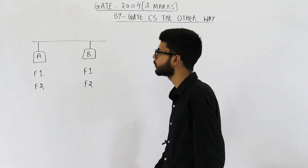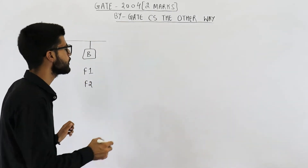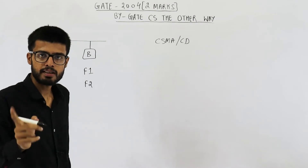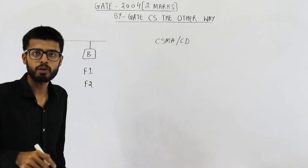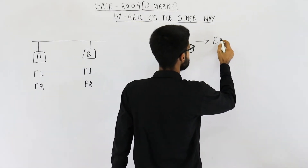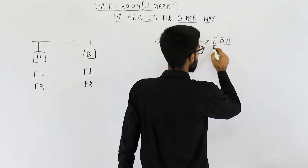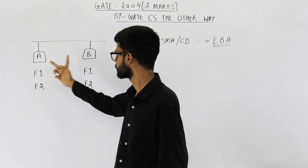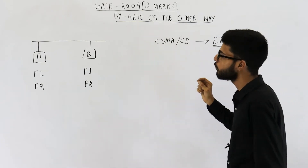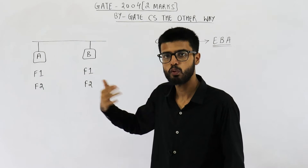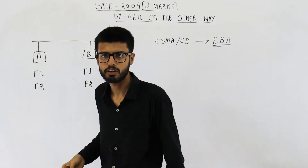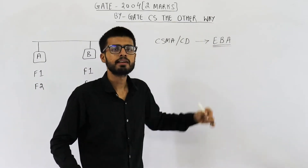Before moving to the solution, let me discuss a few points. In CSMA/CD, if a frame is being sent, the sender will also detect collisions. There is a possibility that a collision occurs. In case of collision, we use the exponential back-off algorithm. This algorithm determines how long each station will wait before retransmitting, because if both stations retransmit immediately, there will be another collision. We need different waiting times, and those are determined by this algorithm.